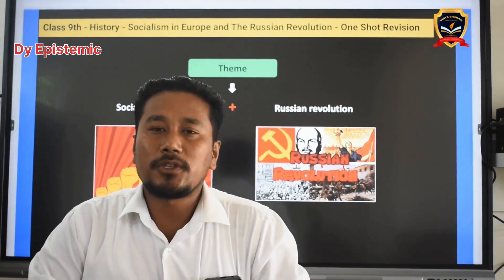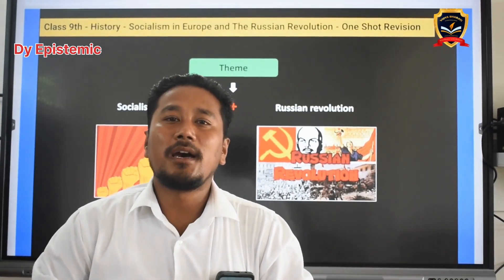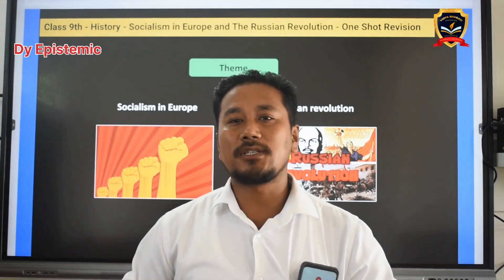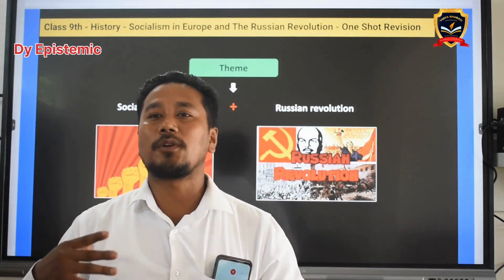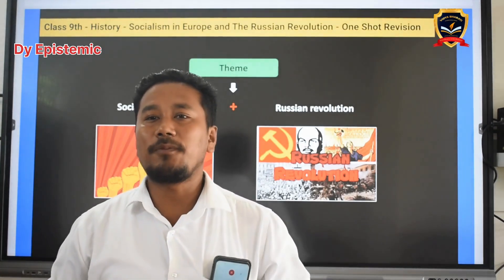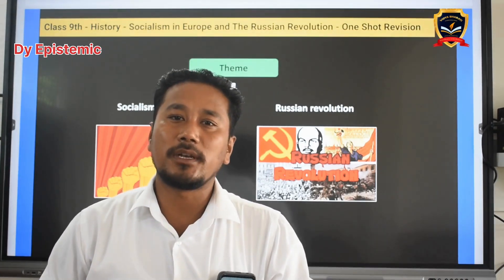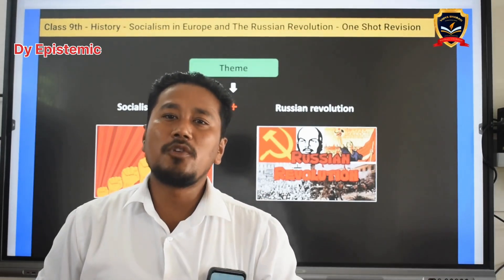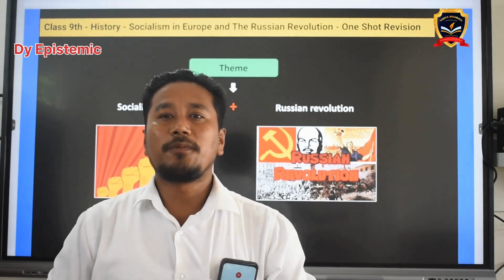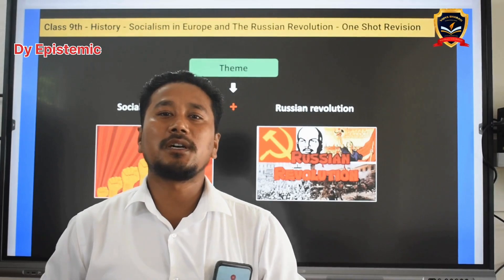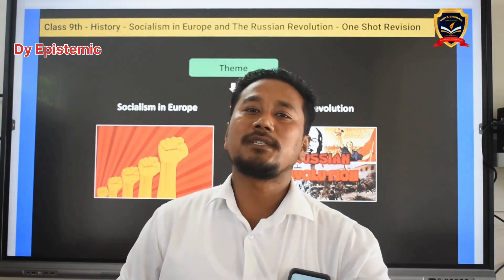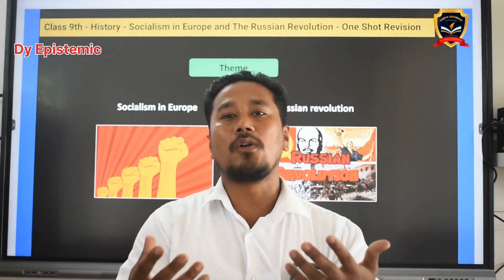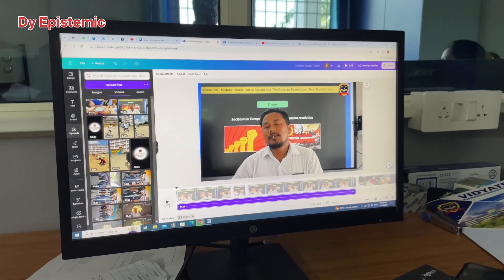Socialism in Europe came out after the French Revolution. The socialism was considered as a way forward. After the French Revolution, the entire world developed a new perspective. Earlier, the French Revolution used to discuss how democracy can be restored, and based on the democracy installed, we can proceed further.